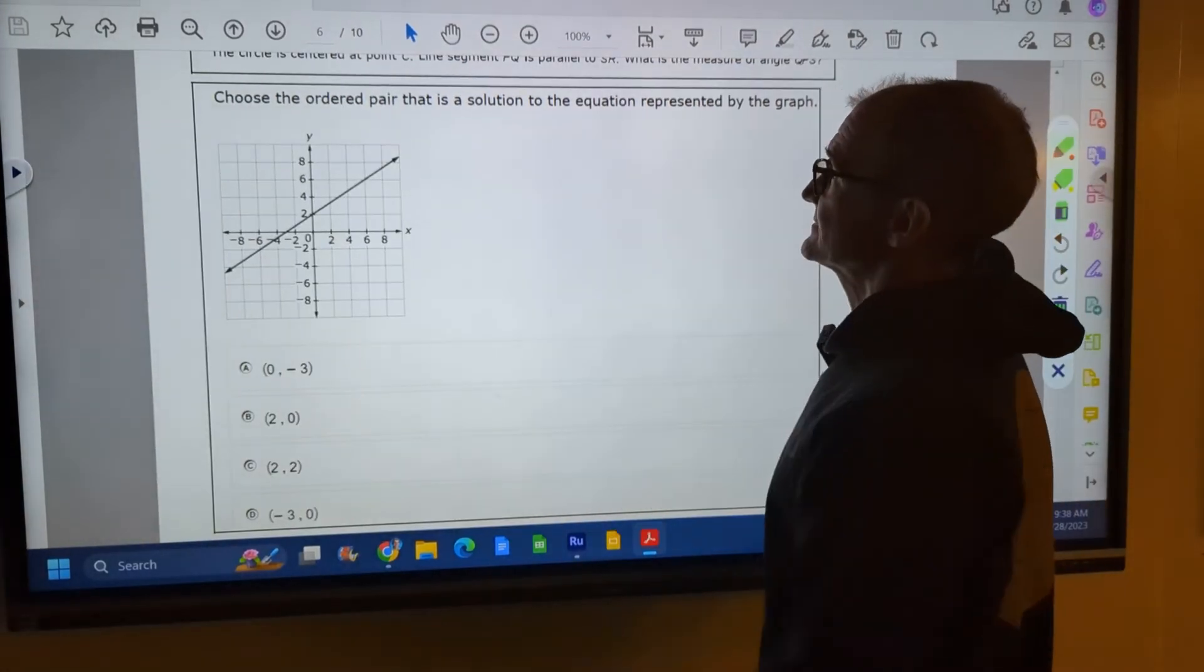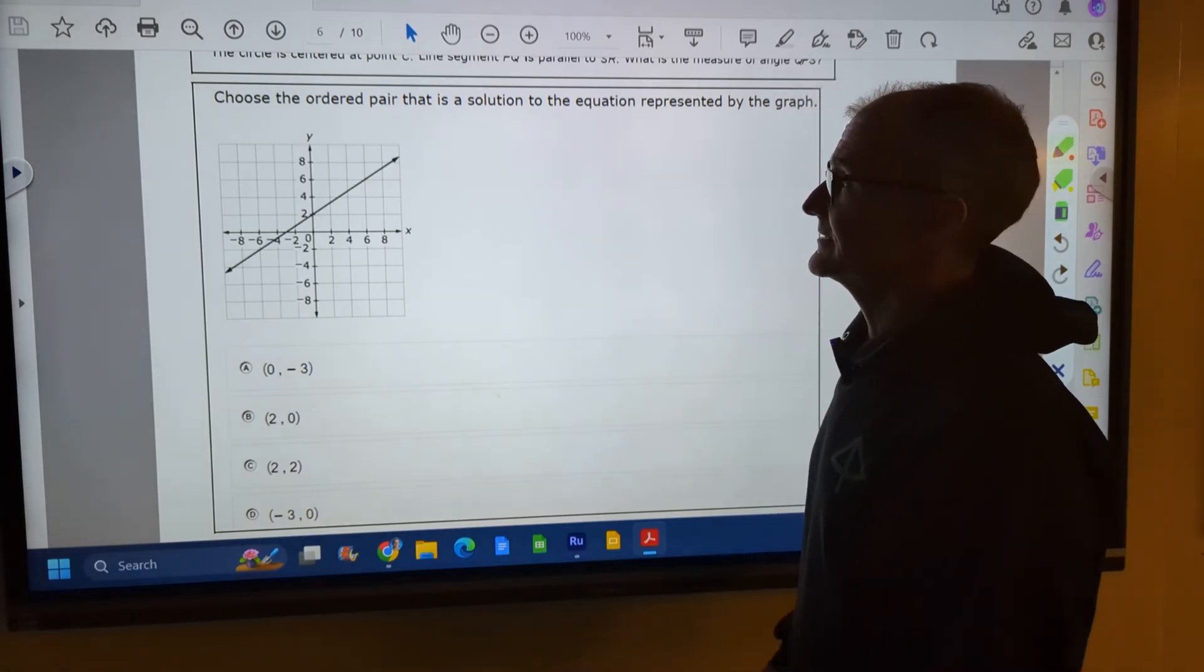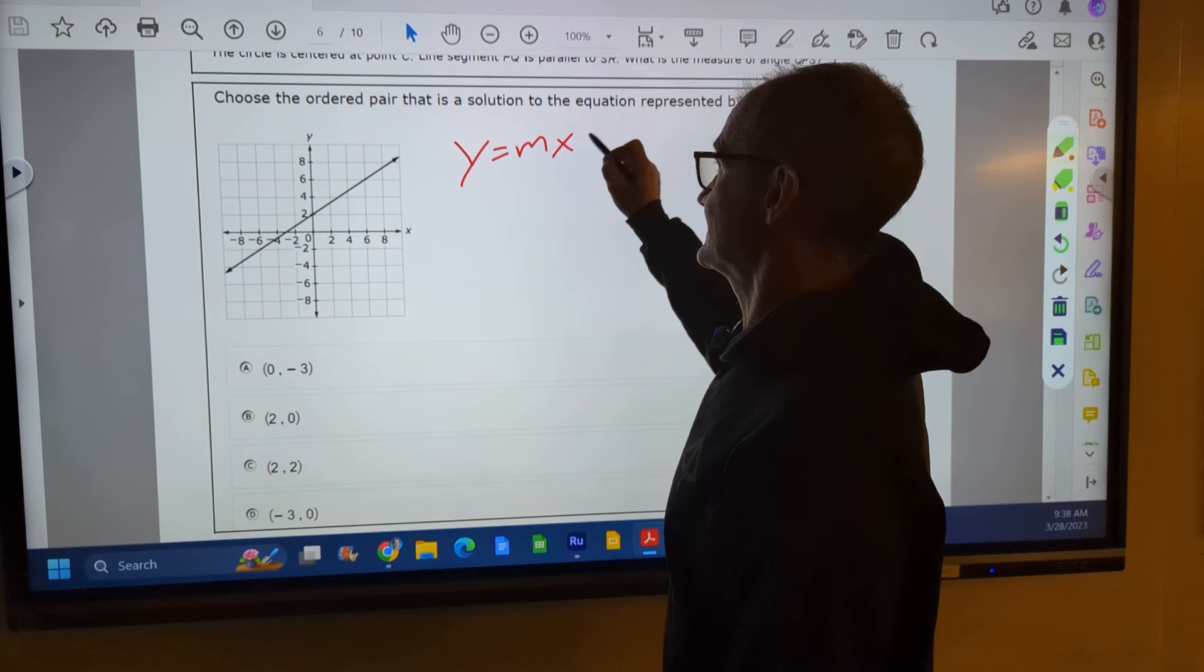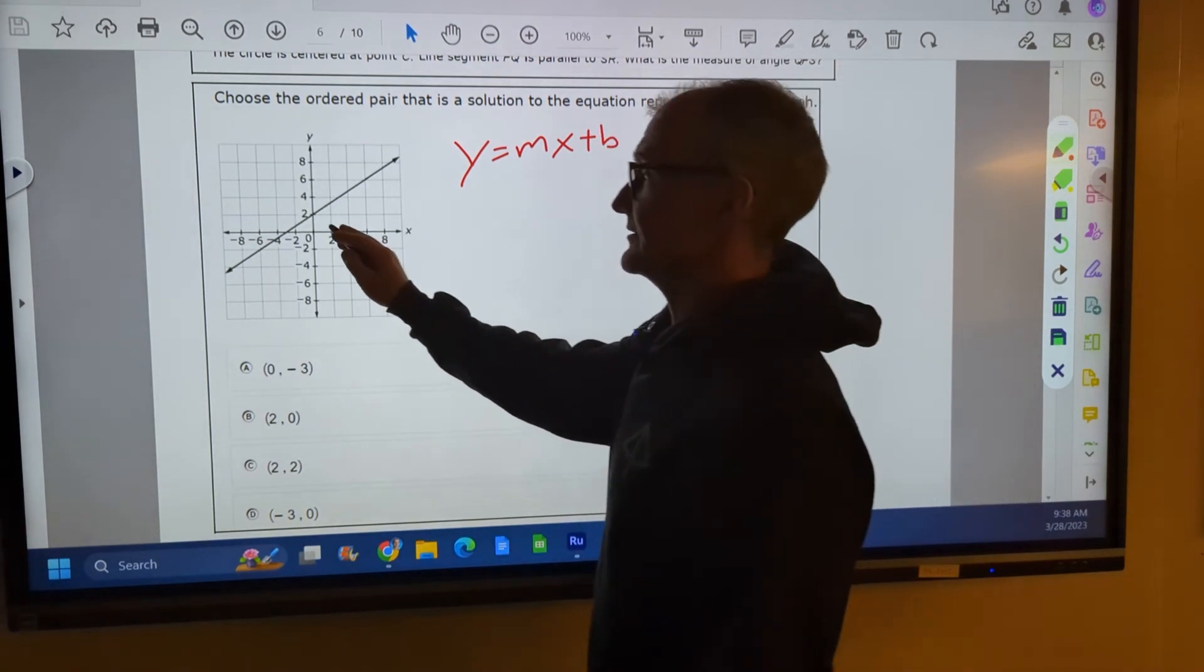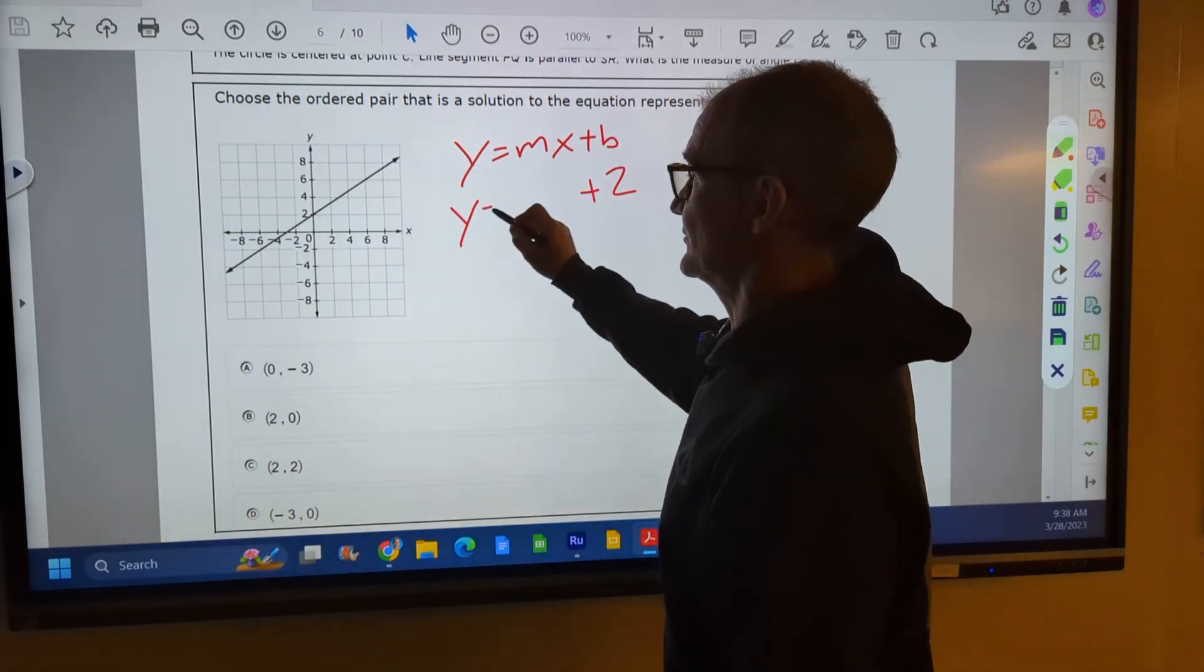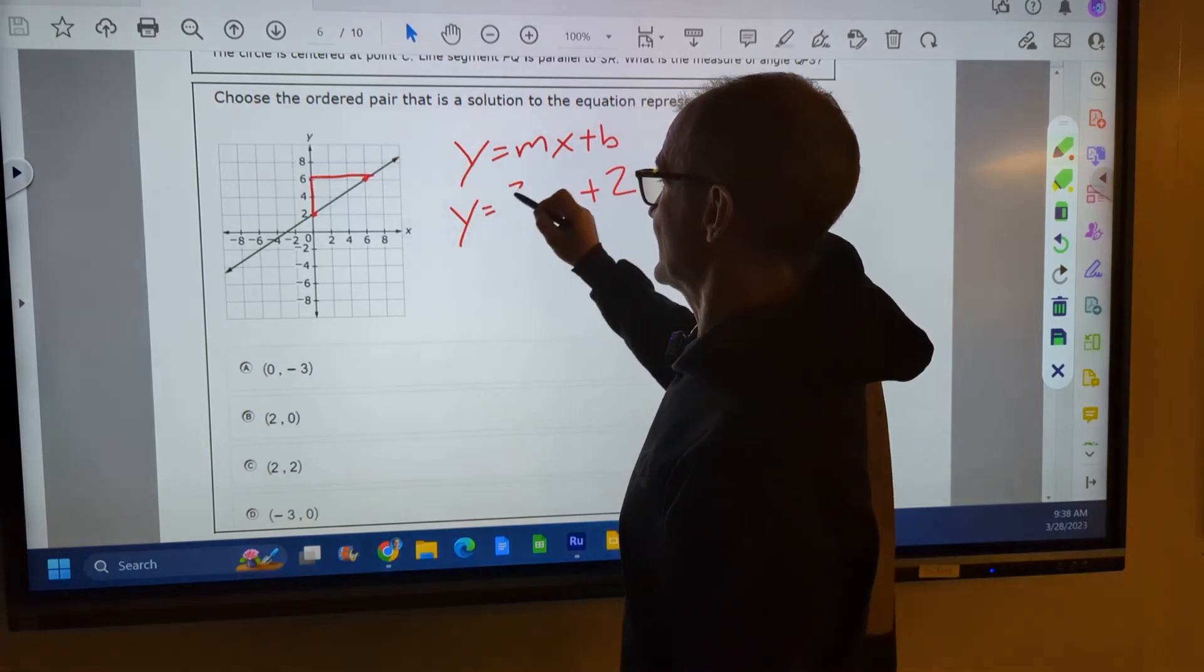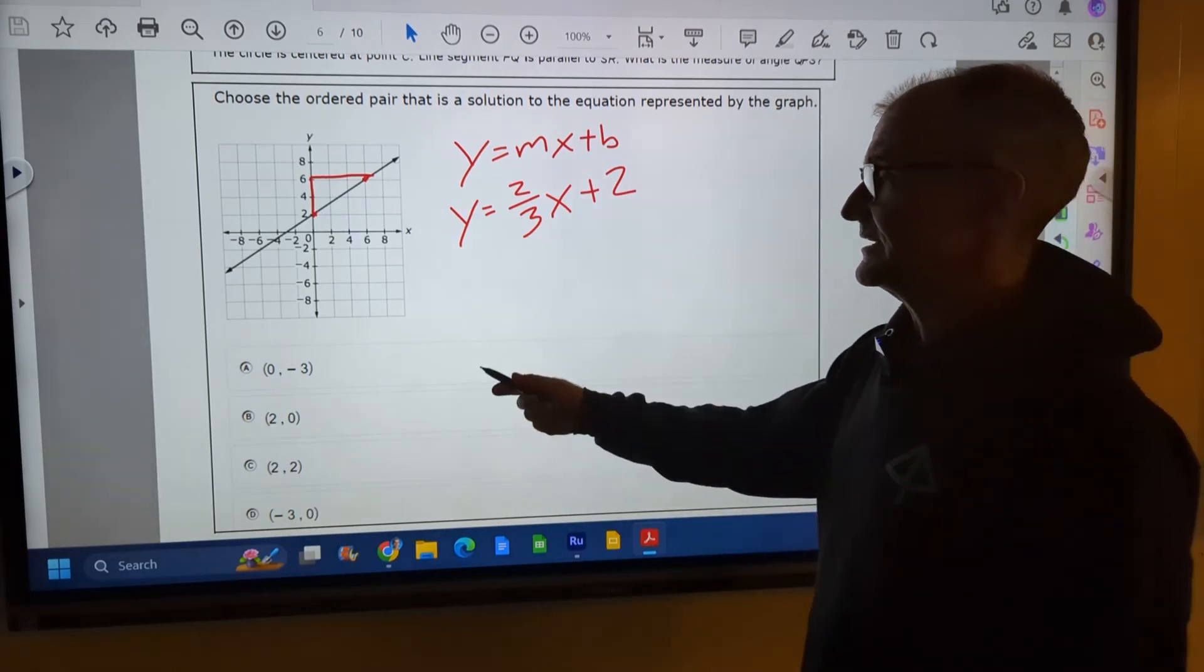All right, choose the ordered pair that is solution to the equation represented by the graph. So I guess there's a couple questions right there. The first question is, what is the equation for the graph? So y equals mx plus b is where we'll start. That's our general equation. And then if we could solve for slope and y-intercept, we'll have our specific equation. It crosses the y-intercept at two, so this is plus two. And then the slope is rise over run. We find some integers here. There's an exact point in there. So it rises two, runs three. So y equals two-thirds x plus two. There's the equation of the graph.